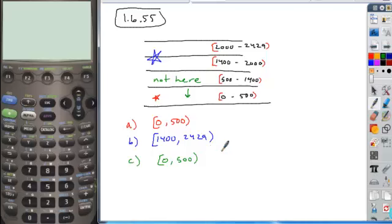And then we're going to have another interval here with a lower limit of 1400 and then an upper limit of 2429. And so when you look at that,